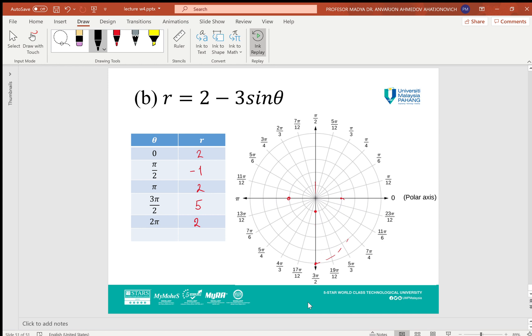When θ = π/2, R = -1, which will be going down. At π, it's 2 again. At 3π/2, it will be 5.